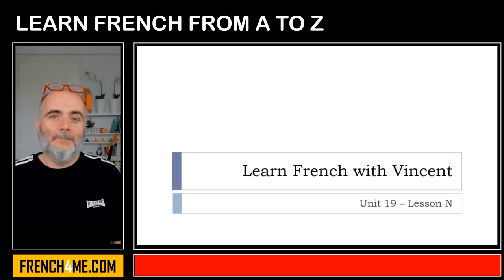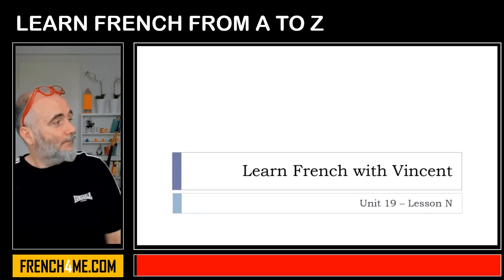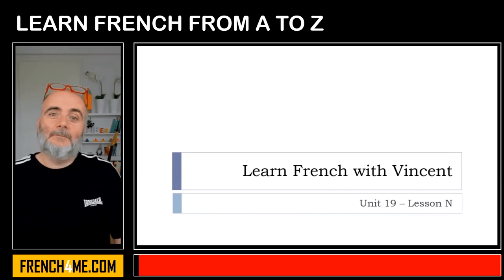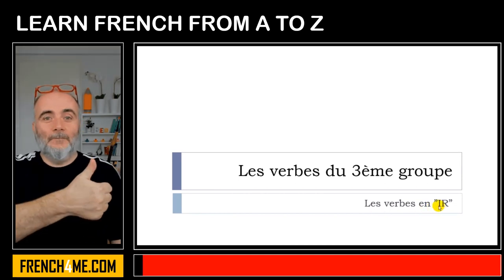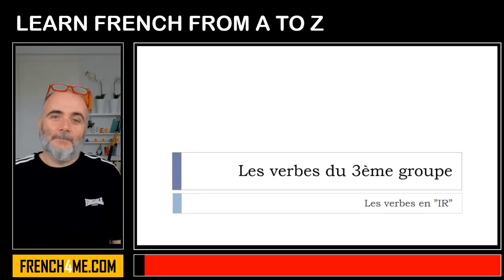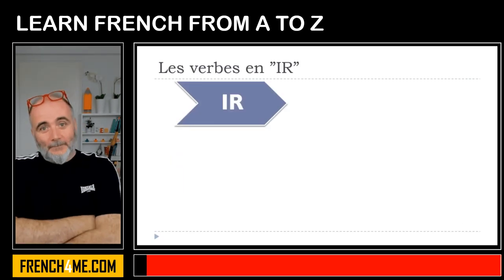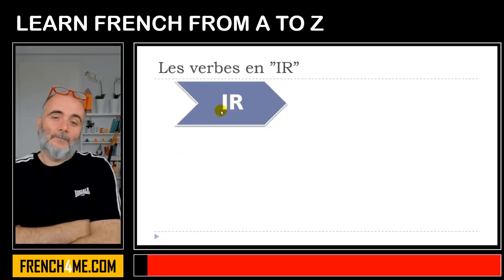Bonjour à tous and welcome to Learn French with Vincent. This is unité 19, leçon N, and we will see together in this lesson les verbes du troisième groupe, and more precisely we'll see the verbs that are ending with IR. Remember they can be quite tricky, so that's the reason why we will take the time to have a look at them. Basically, the verbs ending with IR — we'll see three categories.